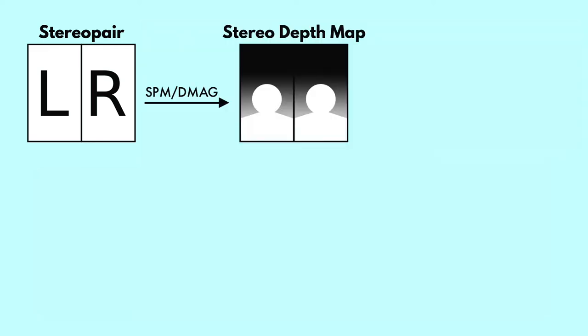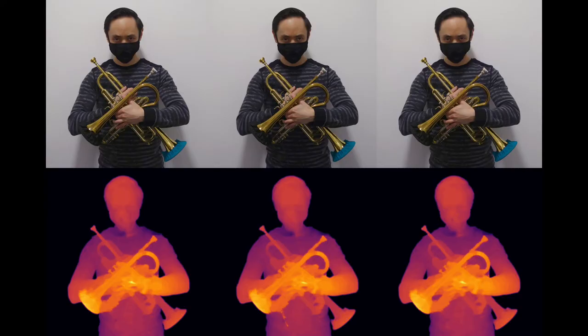Let's look at a flowchart that will show the various programs and AIs we're going to talk about today and what they allow us to do. First, if we start with a stereo pair, you probably already know that we can use Masuji Suto's Stereo Photo Maker and Ugo Capetto's DMAG program to create a depth map from that — giving us both a left and a right depth map, or what we might call a stereo depth map. For these three cross images, it will be cross-eyed on the left and parallel on the right. We can produce the depth map shown below.